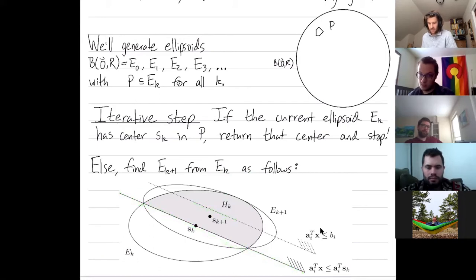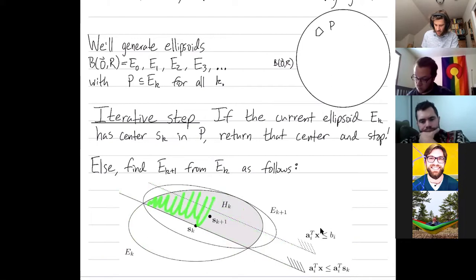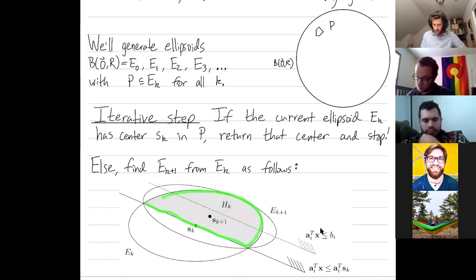The next ellipse is going to be obtained as follows. So previously, we knew that our feasible region had to be inside our current ellipse. Moreover, you have to be on this side, the correct side of this constraint, which means you have to be on the correct side of this line. So we've reduced the area that could contain the feasible region down to what our book calls h sub k, this bit.